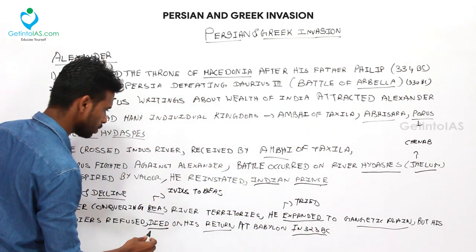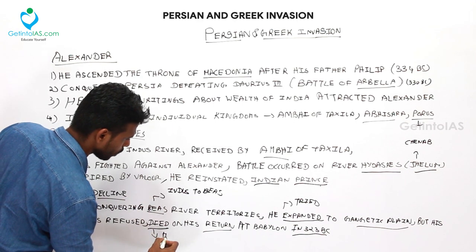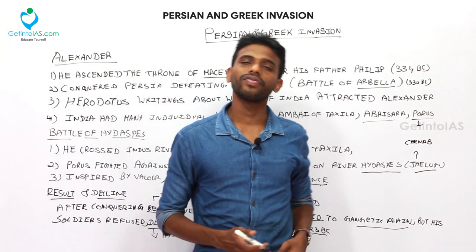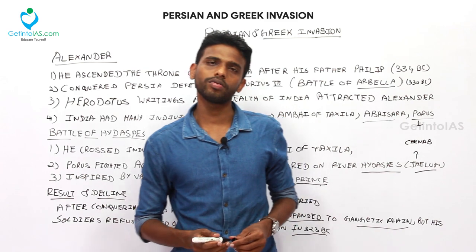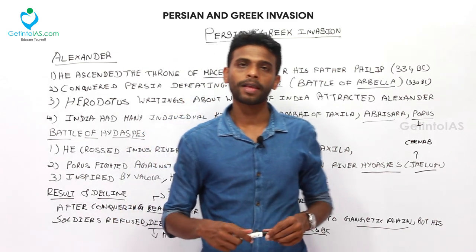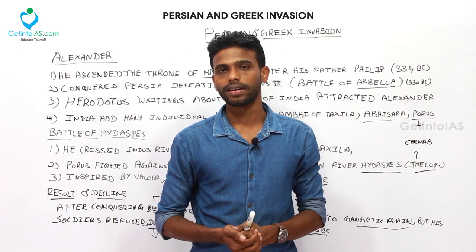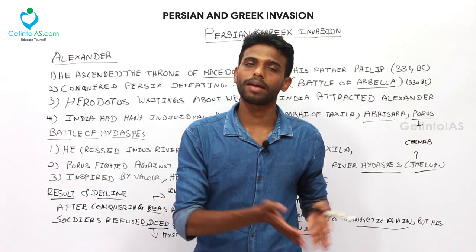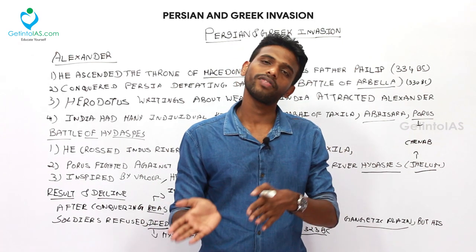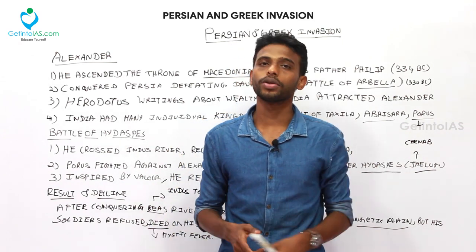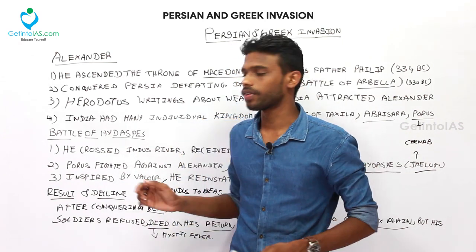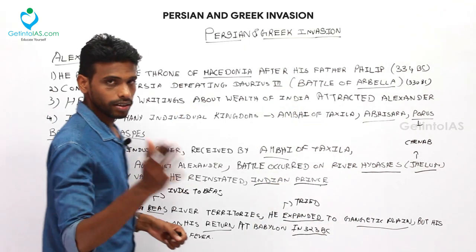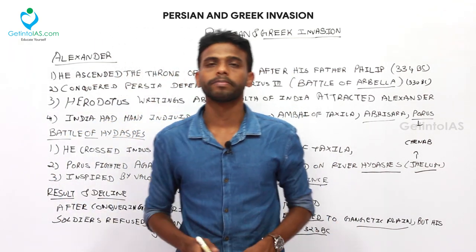Alexander was not interested in persuading his soldiers to continue, so he agreed to return. On his way back to Persia and the Greek empire, he also had to encounter tribal groups who bore anger toward him. He died at Babylon in 323 BC due to a mysterious fever. This is the end of Alexander.